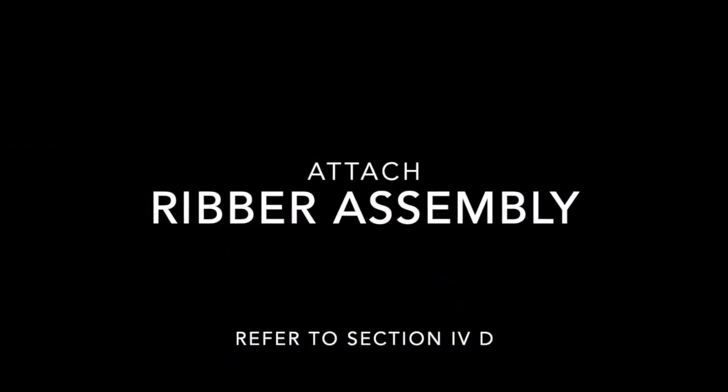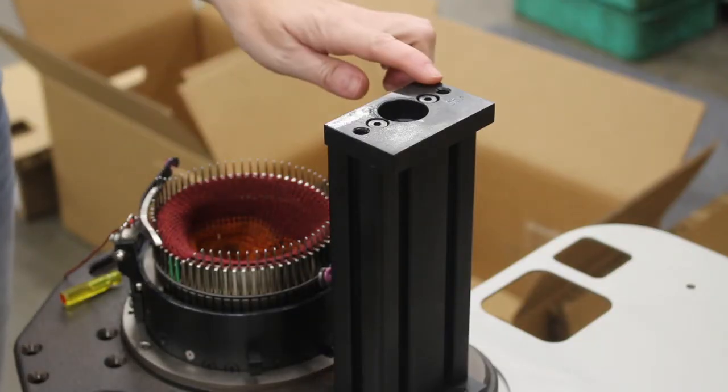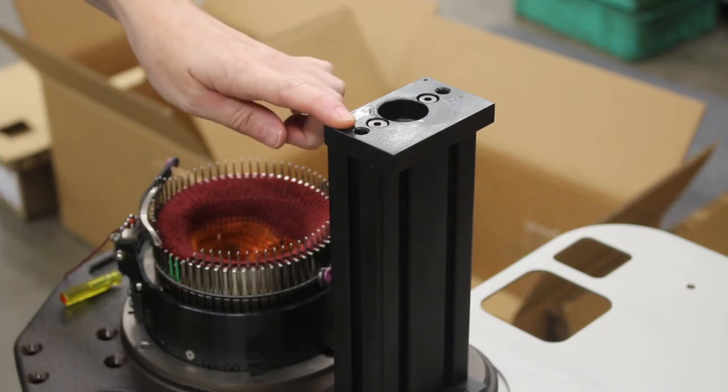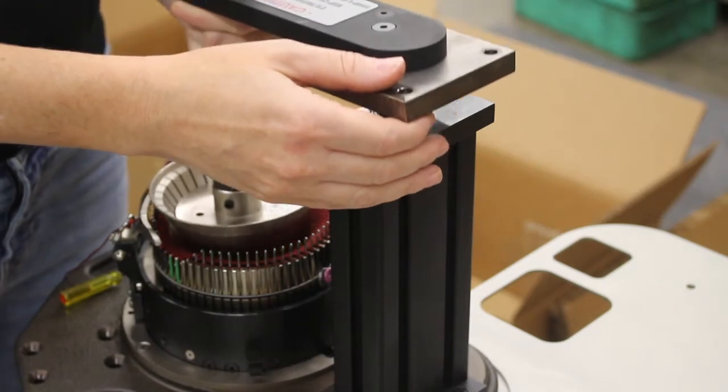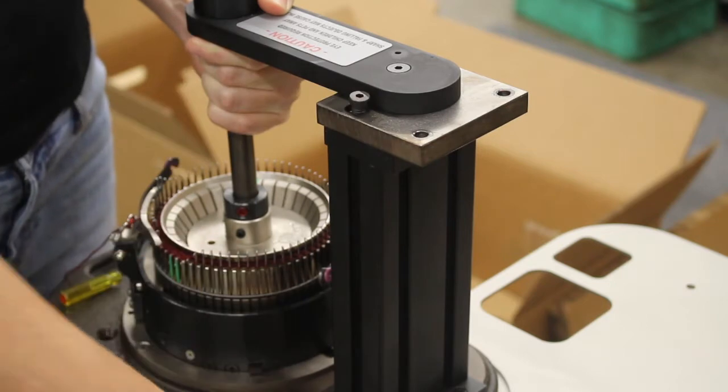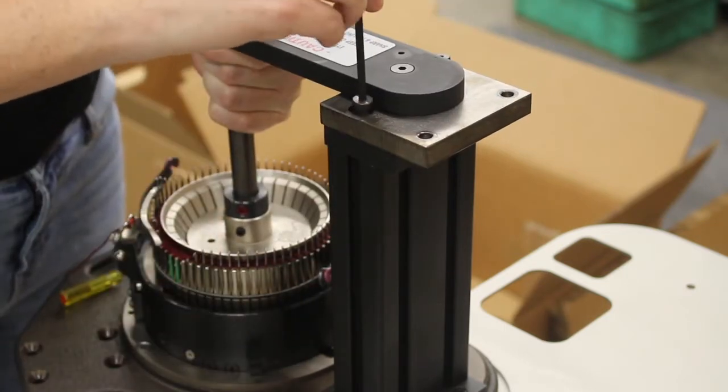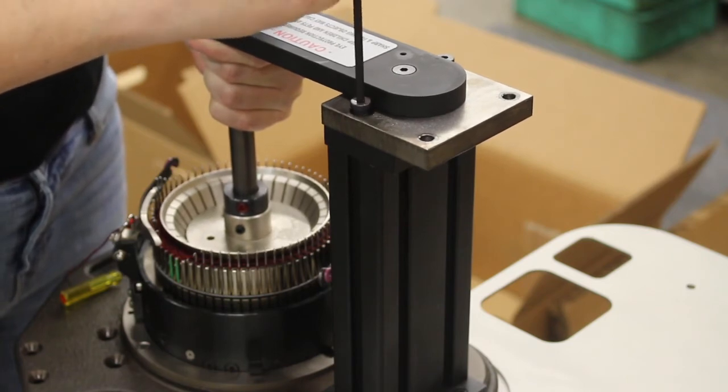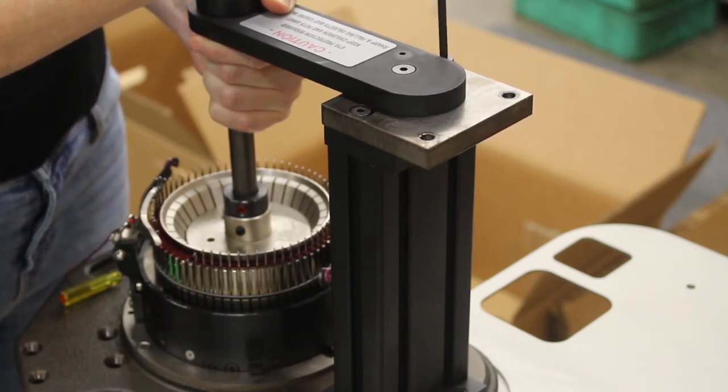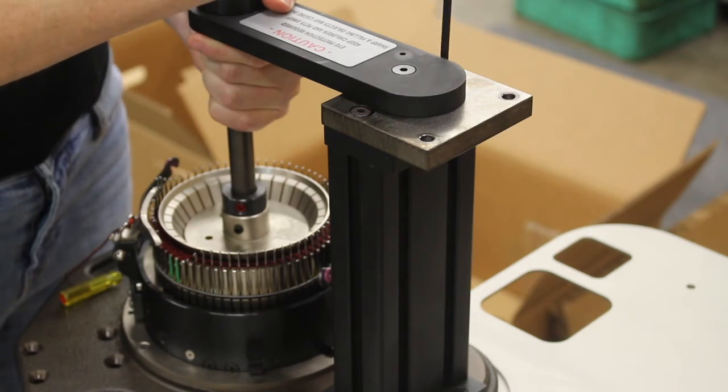Attach the ribber assembly to the upright column. The ribber arm assembly attaches to the ribber column using these mounting holes. Place the ribber arm assembly as shown here. Insert the two low head screws into the slots and use the long-armed yellow handle T-wrench to evenly tighten the screws. Be sure not to over-tighten these screws, as the ribber cone will need to be centered with the cylinder later on.